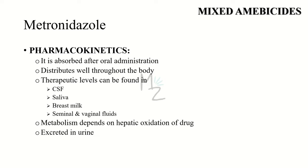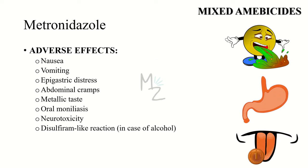Pharmacokinetics of metronidazole: it is completely and rapidly absorbed after oral administration and distributes throughout body tissues and fluids. Therapeutic levels can be found in vaginal and seminal fluids, saliva, breast milk, and CSF. Metabolism depends on hepatic oxidation of the metronidazole side chain by mixed function oxidase followed by glucuronidation. Inducers of cytochrome P450 such as phenobarbital enhance the rate of metabolism, while inhibitors such as cimetidine prolong the plasma half-life. The drug accumulates in patients with severe hepatic disease, and the parent drug and its metabolites are excreted in urine.